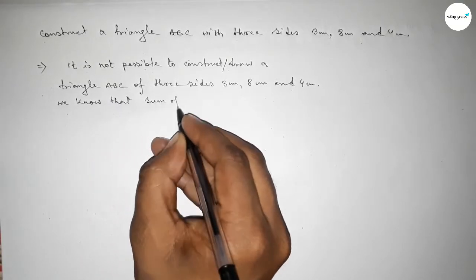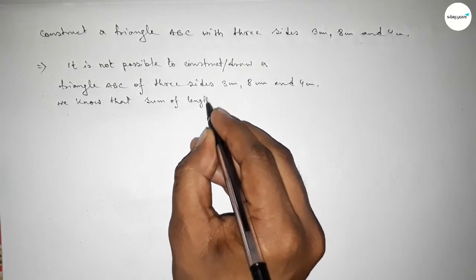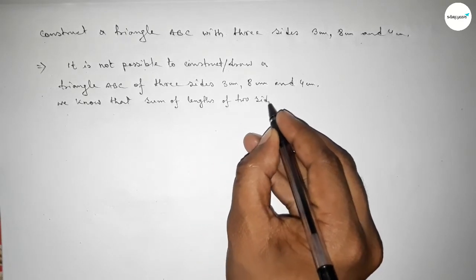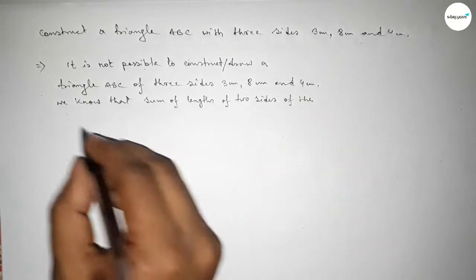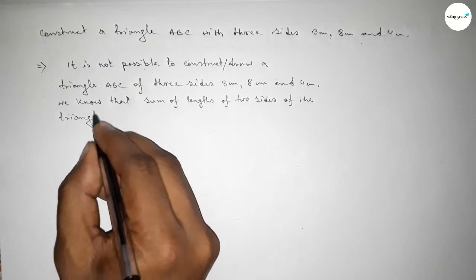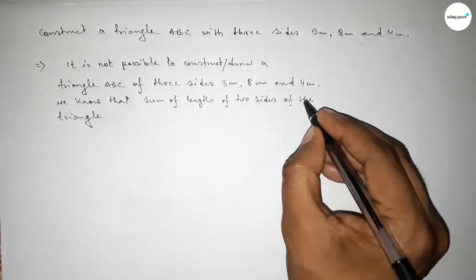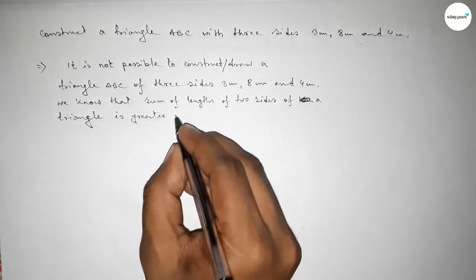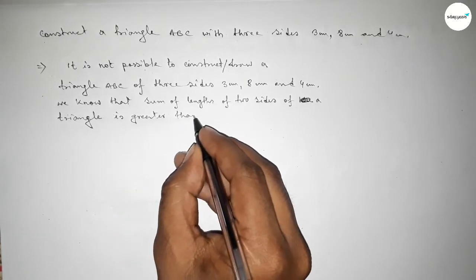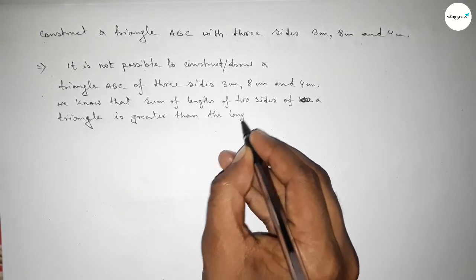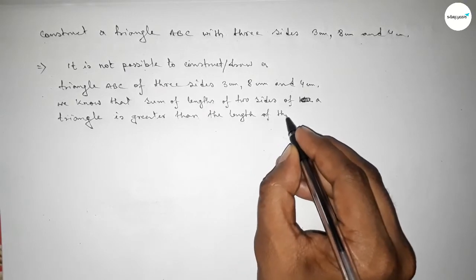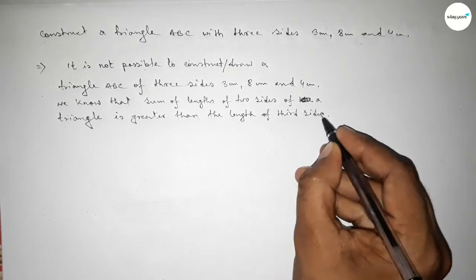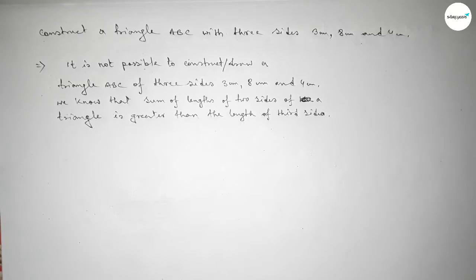The condition to construct a triangle is that the sum of any two sides of a triangle must always be greater than the length of the third side. This is the required condition to construct or draw a triangle.